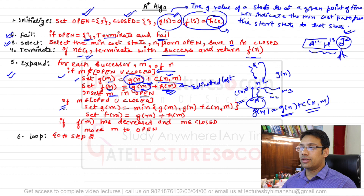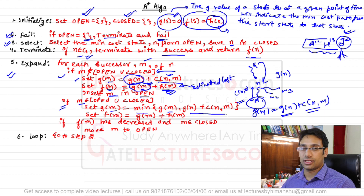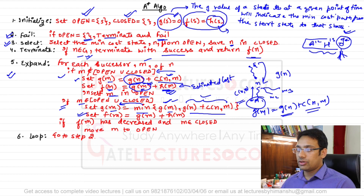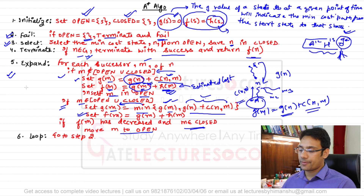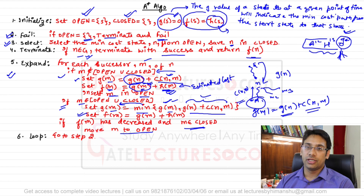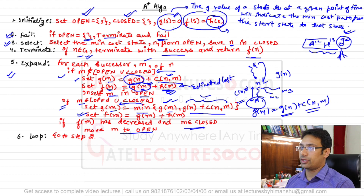If f(m) has decreased and m belongs to closed, move m to open and go back to step two. This is how the A* algorithm works. Since this may be difficult to understand from the algorithm alone, let us take an example and apply this algorithm to find a solution to the problem.